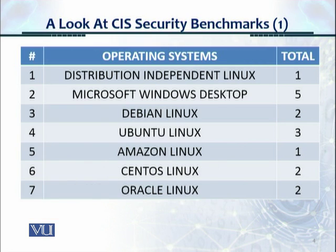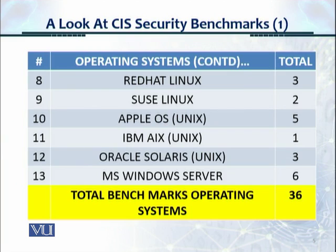For operating systems, we have the following benchmarks: Distribution-independent Linux, Microsoft Windows Desktop — there are five of them. For Debian Linux, there are two. Ubuntu Linux, three. Amazon Linux, one. CentOS Linux, there are two benchmarks available. Oracle Linux, there are two. Red Hat, we have three benchmarks available for different versions. SUSE Linux, two. Apple OS, IBM AIX, Oracle Solaris. And then for Microsoft Windows Server, we have six different versions of the benchmarks, totaling 36 in operating systems.